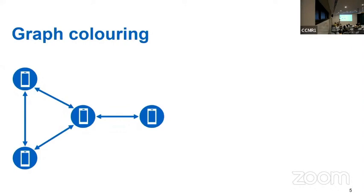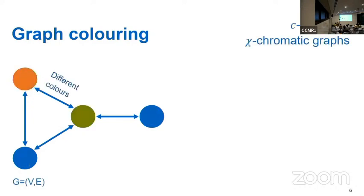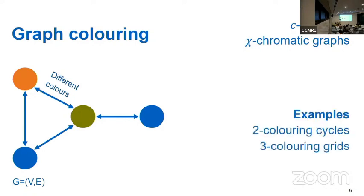So what's graph coloring? Graph coloring is this very natural problem in computer science where you have a graph of computers, and they want to output some colors such that computers that are neighbors have different colors. More precisely, we can look at c-coloring of k-chromatic graphs. We have c colors available, and the minimum number of colors needed to color the graph is k. For example, we can two-color cycles, or three-color grids, or 25-color bipartite graphs.